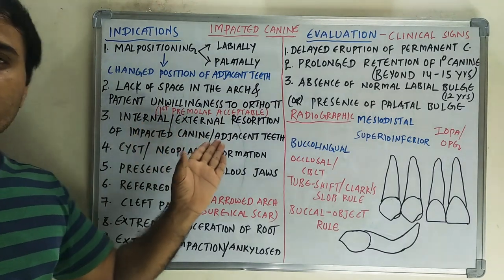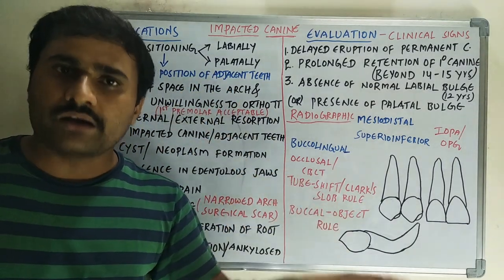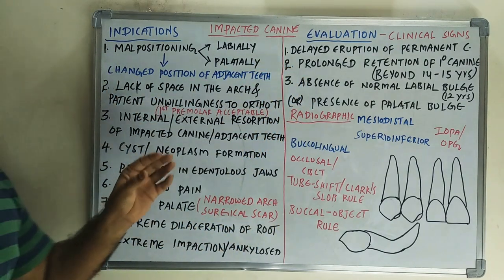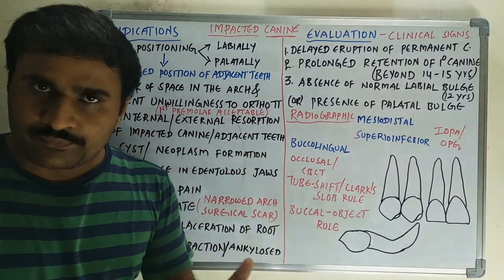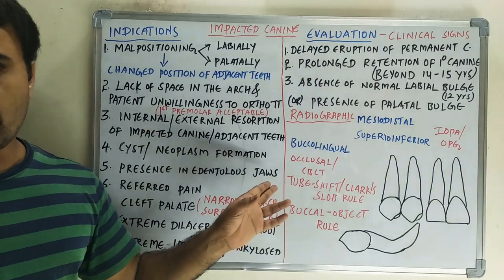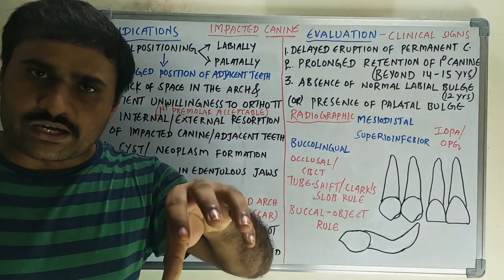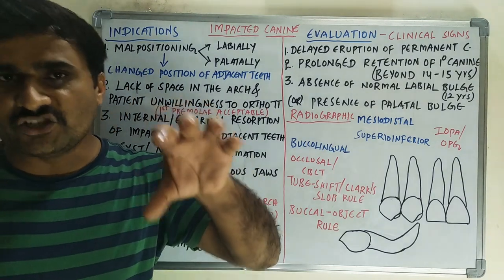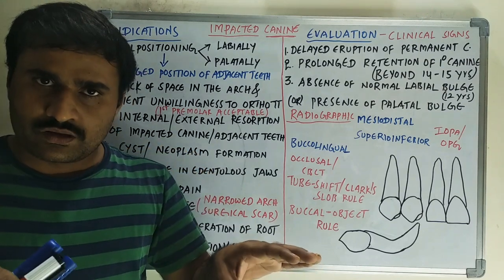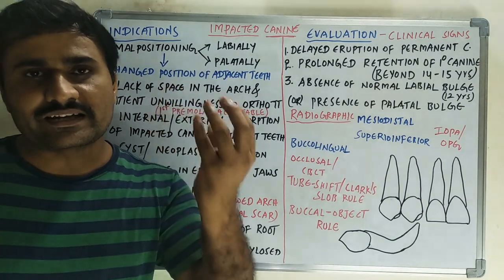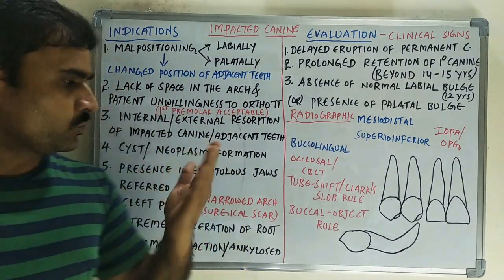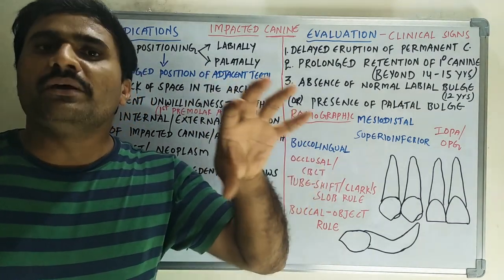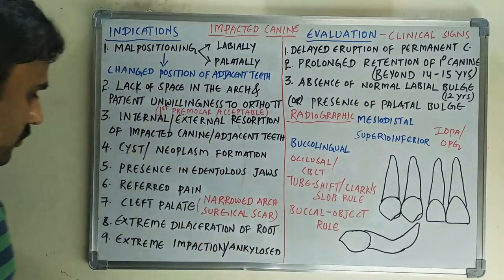Third, internal or external resorption of the impacted canine or adjacent teeth — such as the lateral incisor, first premolar, or the canine itself. Fourth, cysts — especially dentigerous cysts — or neoplasm formation around the impacted canine. Fifth, presence of an impacted canine in edentulous jaws: if the covering bone is more than 2 mm, you can leave it; but if less than 2 mm, denture pressure may cause resorption and stimulate eruption, requiring removal. Sixth, referred pain or neurological symptoms from the impacted canine.